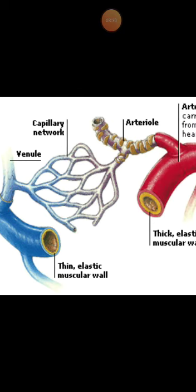This is the principal site where the exchange of water, oxygen, carbon dioxide, nutrients, and other waste materials takes place between the blood and the body tissue. So, these are the three important blood vessels in our body.